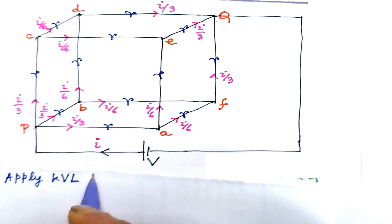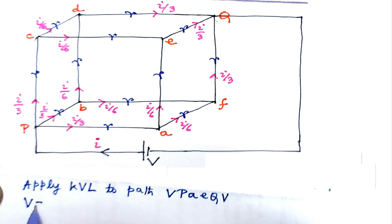Apply kv, apply kv to path vpa eq v. So we have v equal to i into resistance along vp, which is 0, plus...